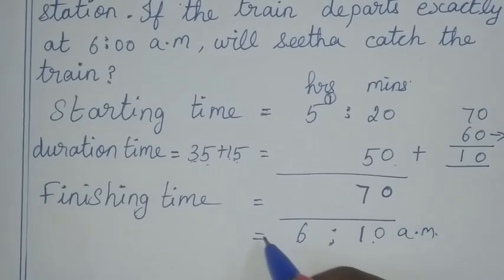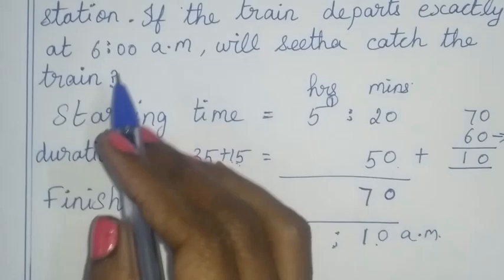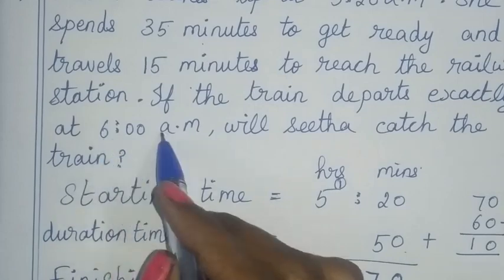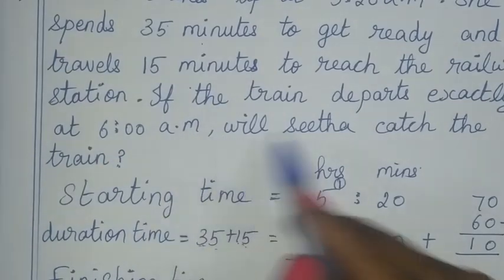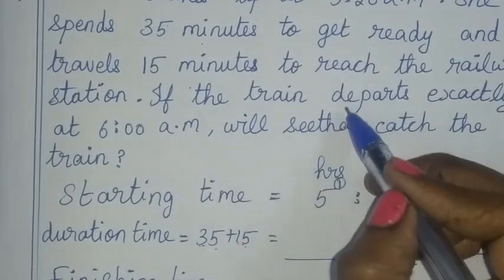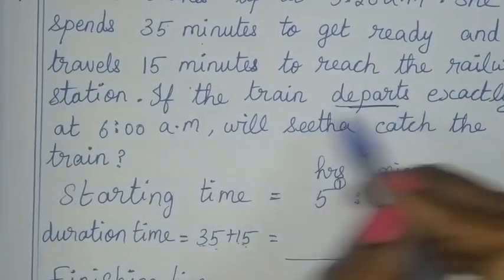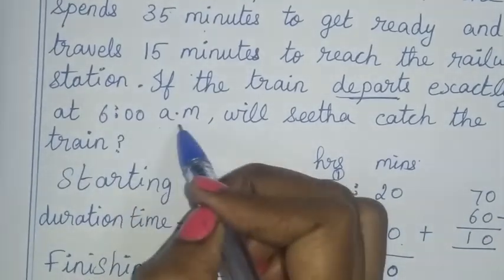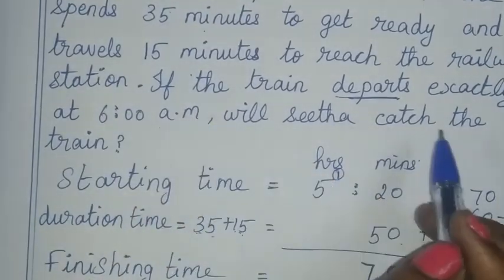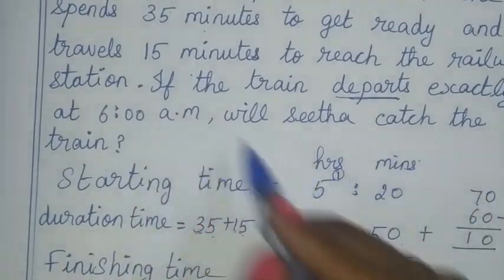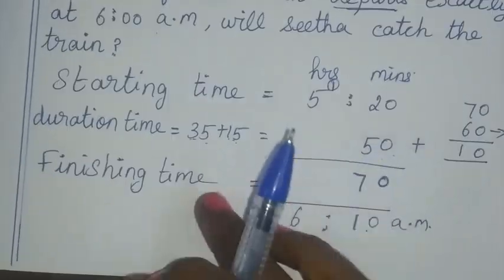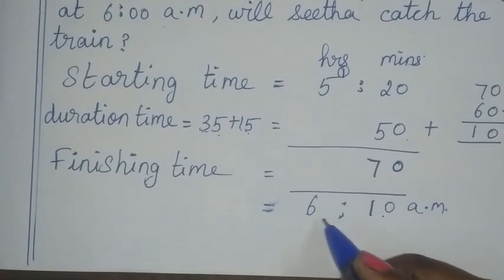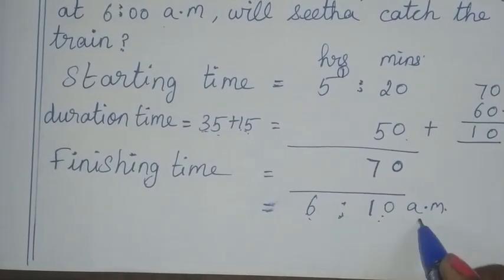The reach time is 6:10am. But the train departs at 6 o'clock. Sita reached the railway station at 6:10am, but the train departs exactly at 6am.